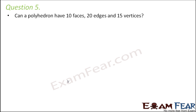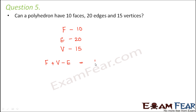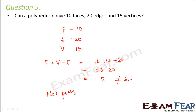Question number five: can a polyhedron have 10 faces, 20 edges, and 15 vertices? We check if it satisfies Euler's formula. F plus V minus E equals 10 plus 15 minus 20, which equals 25 minus 20, that is equal to 5. Since this gives 5 and not 2, it does not satisfy Euler's formula. Therefore it is not possible to have a polyhedron with these many faces, vertices, and edges.